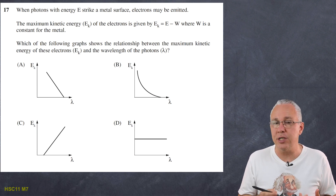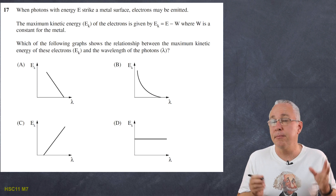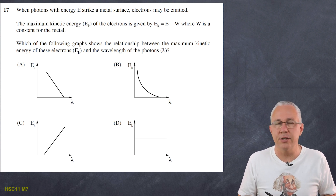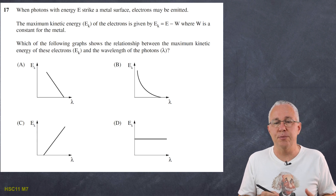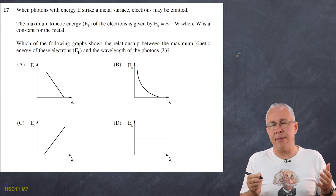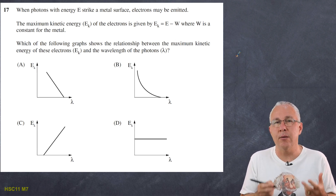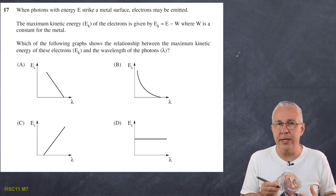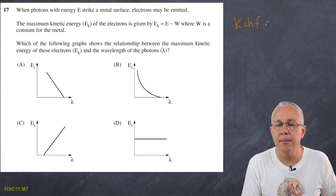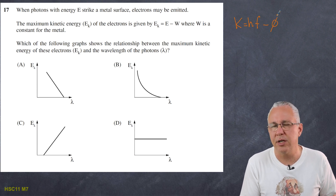Let's get started. Question 17 talks about photons with a certain energy E striking a metal surface, where electrons may be emitted. The maximum kinetic energy is given by that formula where W is the work function of the metal. To establish a mathematical relationship for the graphs, write down the formula: kinetic energy equals hf minus phi (the work function). I prefer to write phi, though W is also okay.